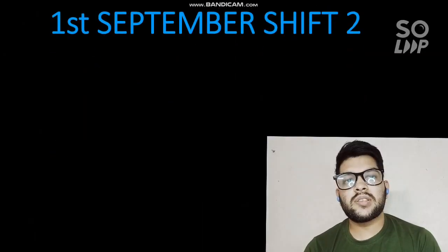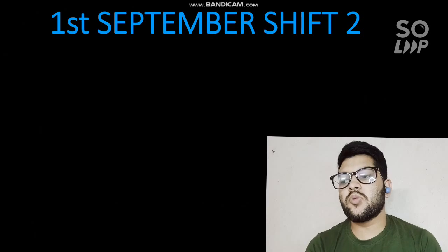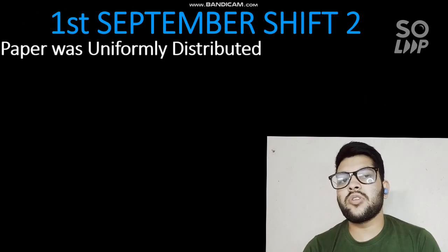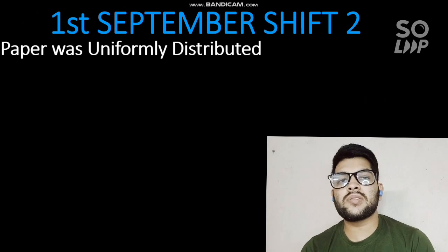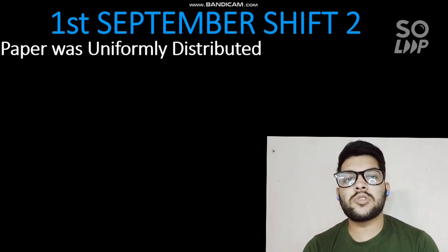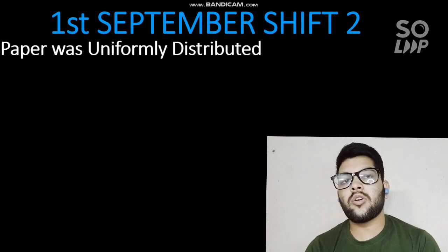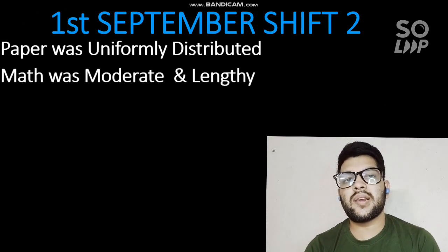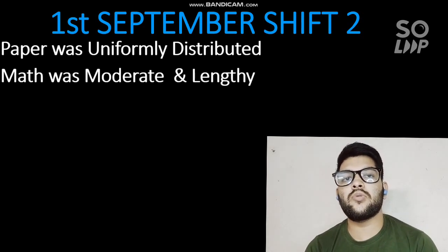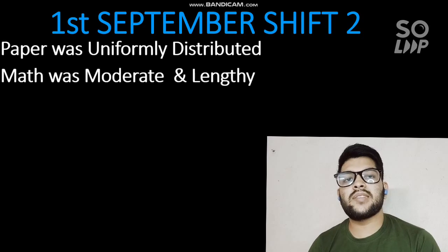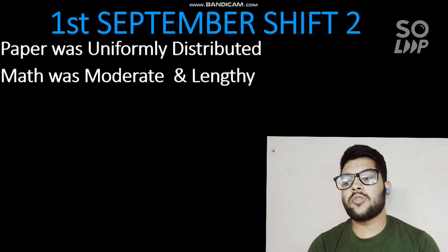Let's start the analysis. For September 1 Shift 2, the paper was uniformly distributed — almost every topic was covered with at least one question, and very few topics were skipped. For Maths specifically, it was moderate and lengthy. Some institutes considered it moderate to difficult, others moderate to lengthy and time-consuming. Overall, moderate and lengthy, similar to the previous shift.